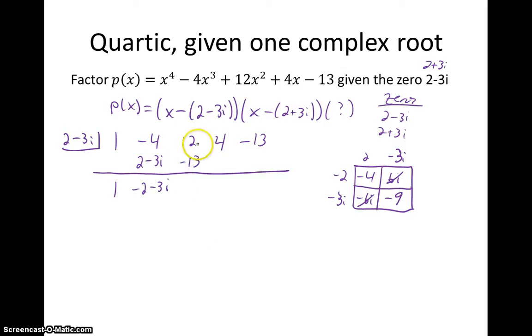Negative 13 and positive 12 is negative 1. Multiply that by 2 minus 3i gives me negative 2 plus 3i. Add that to 4, and that's going to give me 2 plus 3i. Oh, and look at this, 2 plus 3i and 2 minus 3i are conjugates of each other, so when I multiply them, I'll just get 4 plus 9, which is 13, and that gives us the remainder of 0.